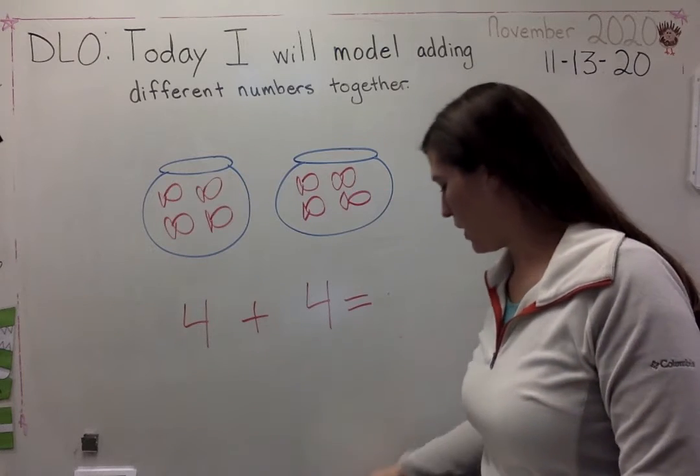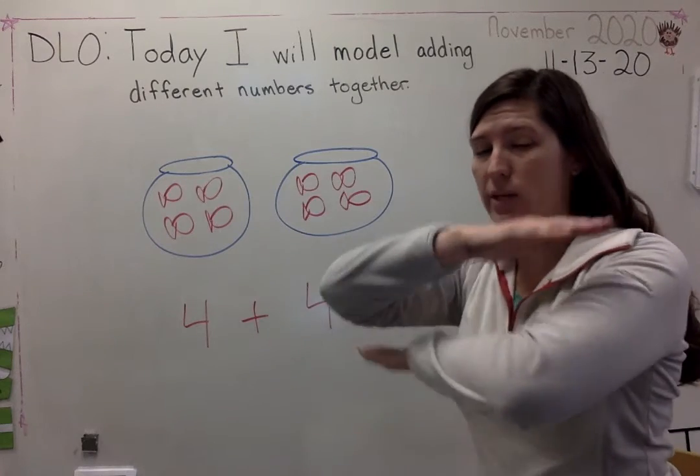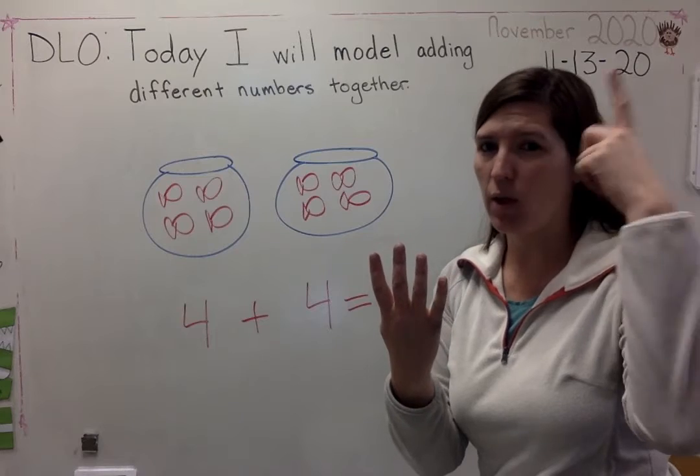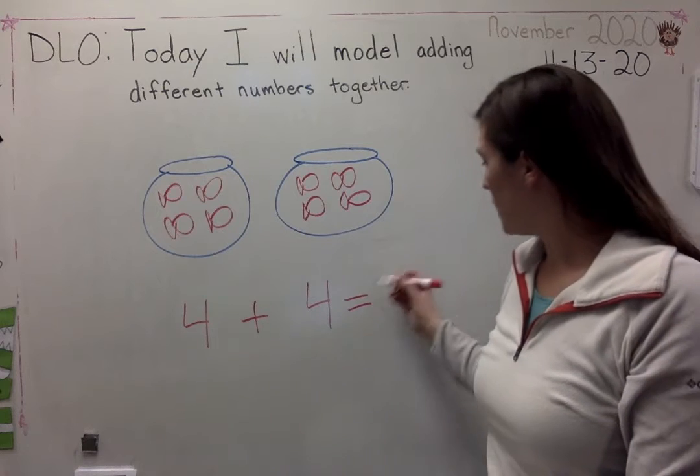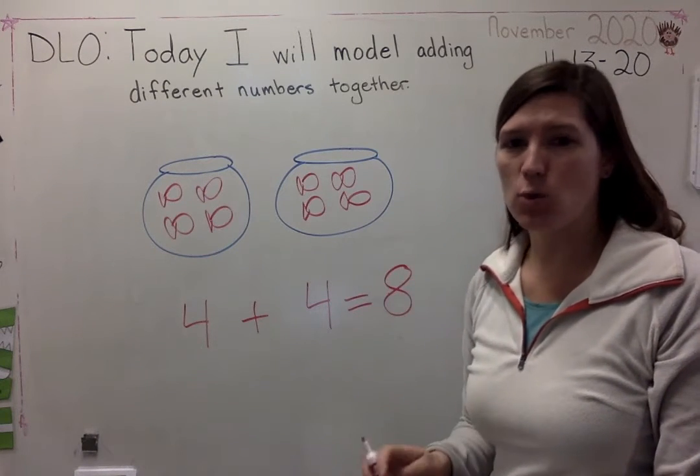How many do I have all together? Which number is greater? They're equal. Equal means the same. So I'll put four in my head, four in my hand, and let's count up. Four, five, six, seven, eight. Make an S. Close the gate. That's the way you make an eight.